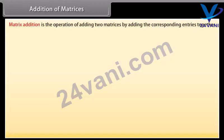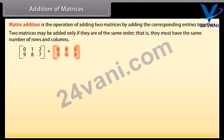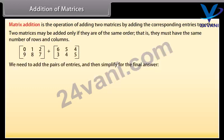Addition of matrices. Matrix addition is the operation of adding two matrices by adding the corresponding entries together. Two matrices may be added only if they are of the same order, i.e., they must have the same number of rows and columns. Let's add these matrices — we need to add the pairs of entries and then simplify for the final answer.